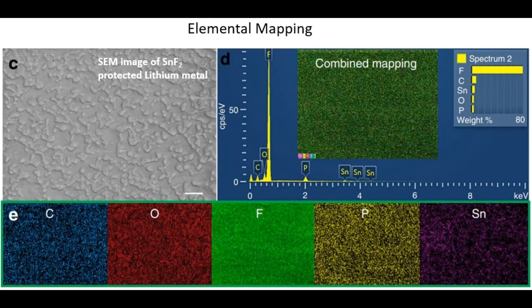Similarly here you can see the distribution of elements such as carbon, oxygen, fluorine, phosphorus, and tin in a tin fluoride modified lithium metal foil for battery application.